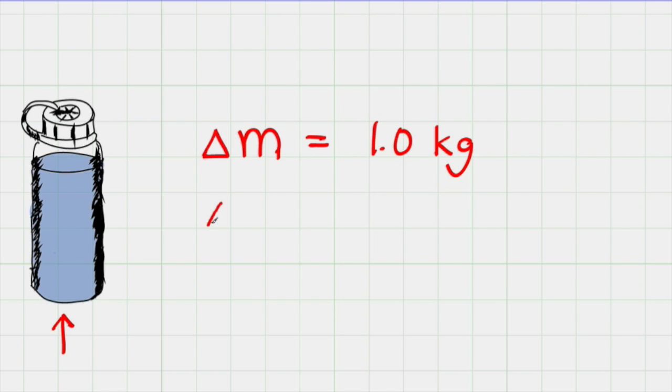We might talk about the volume of this bottle. The amount of volume or the magnitude of volume in here we would write as delta V, and I use a V with a script to indicate volume, and we might say that is 1 liter.